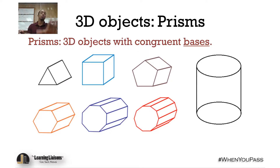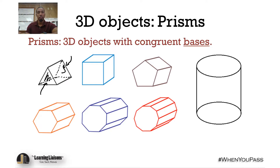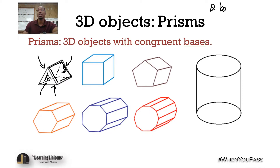When we're naming prisms, it's important to know that we name them by their face. This is a triangular prism because it has a face in the back and the front that are triangular — two bases with faces. These are the bases, front and back, and these would be the lateral faces.